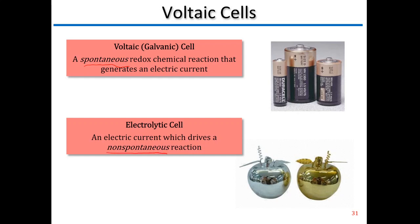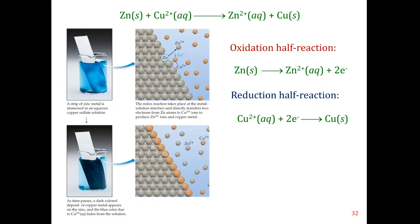An example of an electrolytic cell would be electroplating — driving zinc, copper, or something like that onto a metal surface using an electrical current. That's an example of an electrolytic cell. The main thing we're going to talk about is voltaic cells.